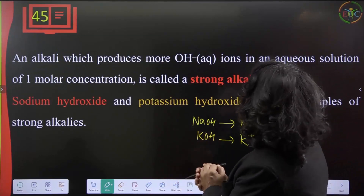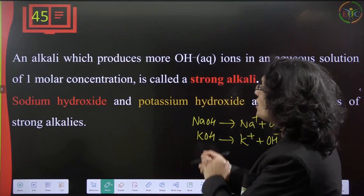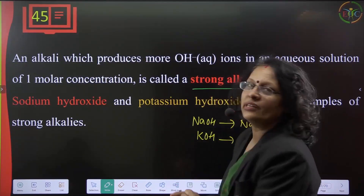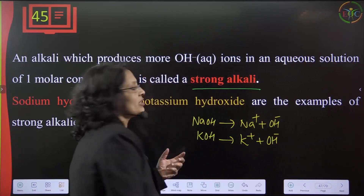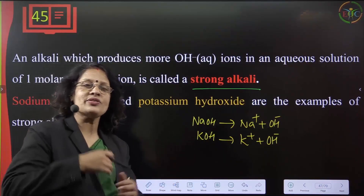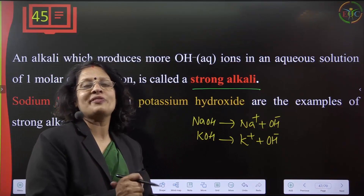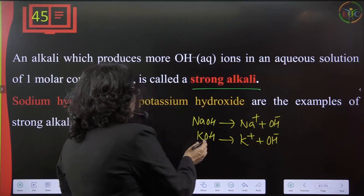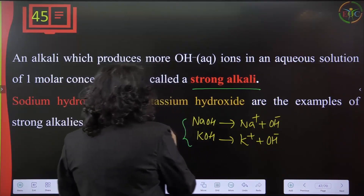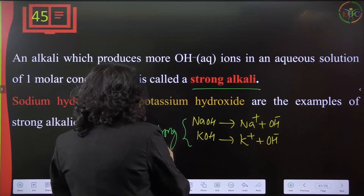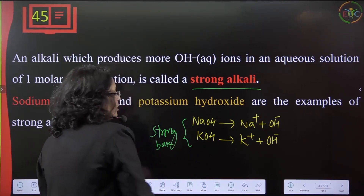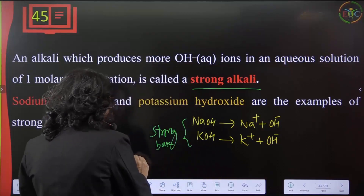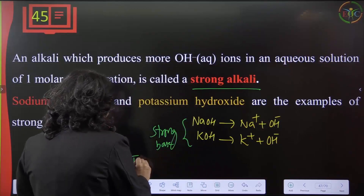An alkali which produces more OH⁻ ions in an aqueous solution of one molar concentration is called a strong alkali. Sodium hydroxide and potassium hydroxide ionize completely, producing plenty of OH⁻ ions — that is why they are called strong bases. The characteristic of strong bases is that they ionize completely.